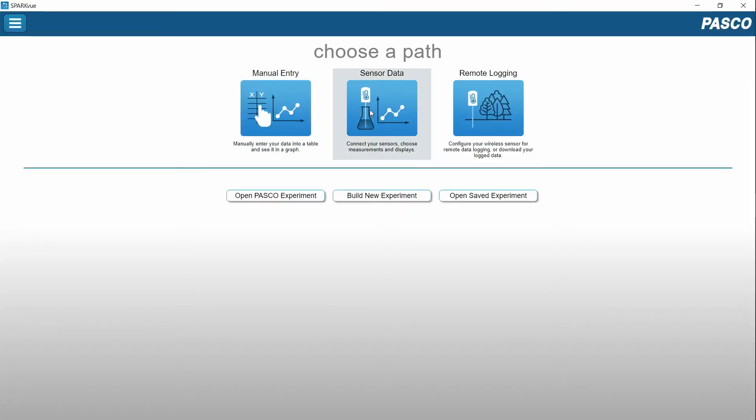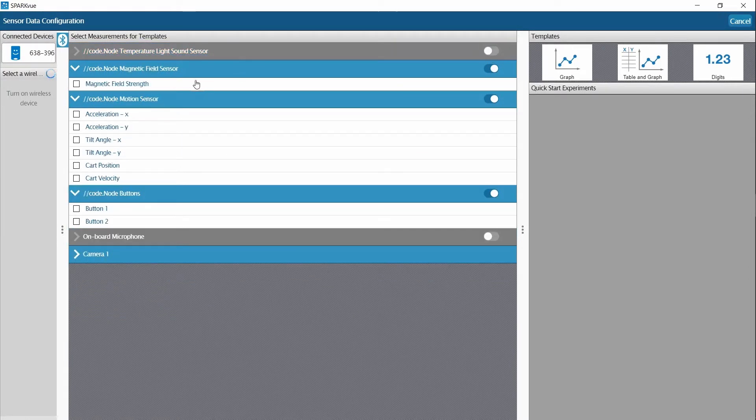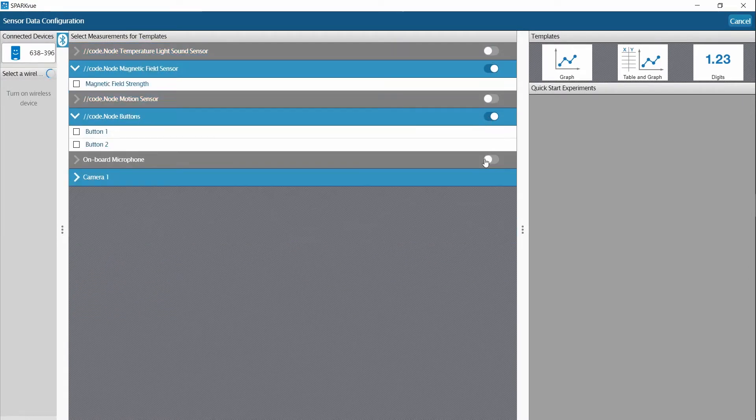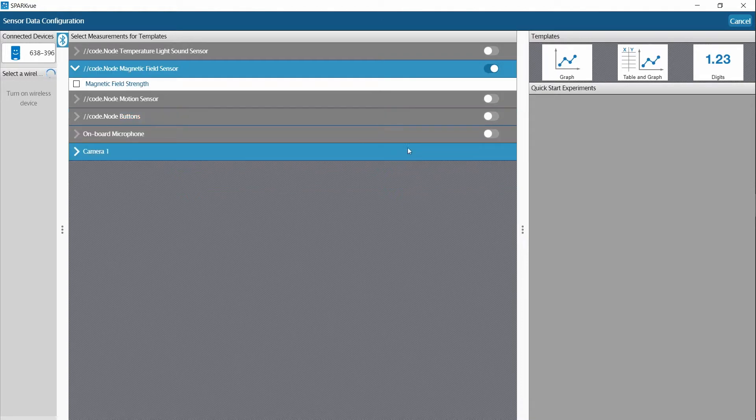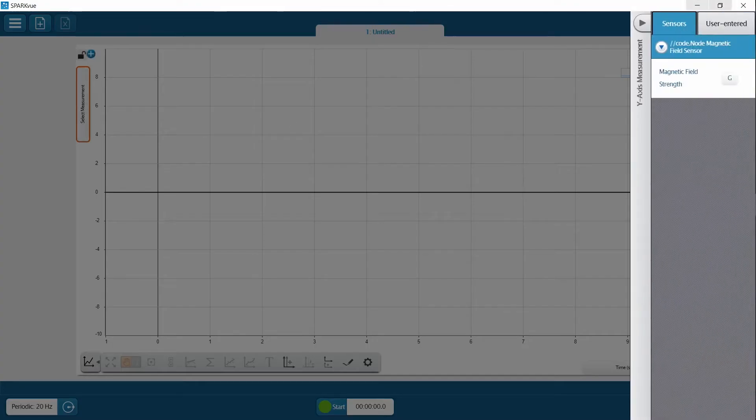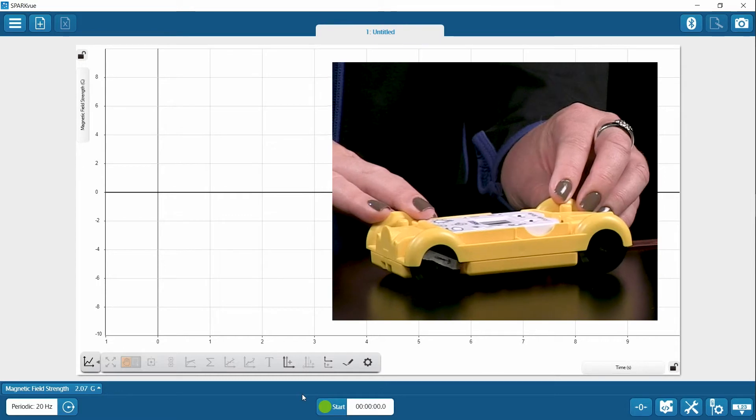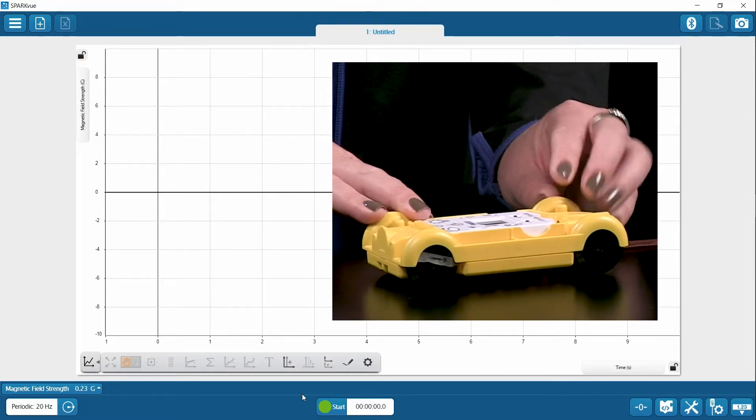I'm going to go ahead into SparkView and hit Sensor Data, and for this activity we're just going to use the magnetic field strength. I'm going to disable the other sensors and bring up a line graph that's going to show me magnetic field strength over time.